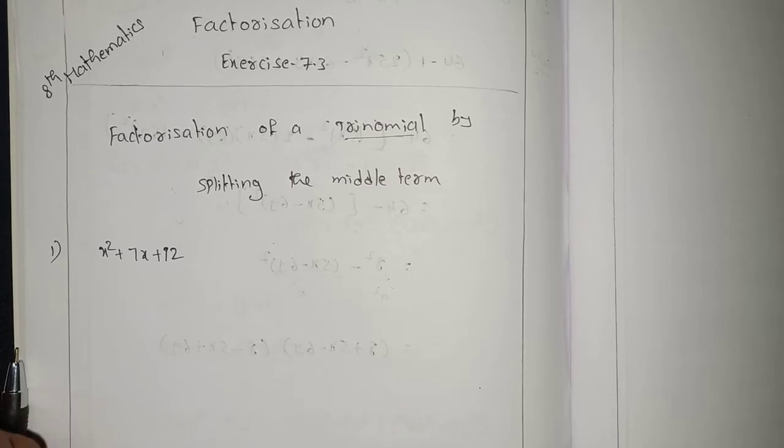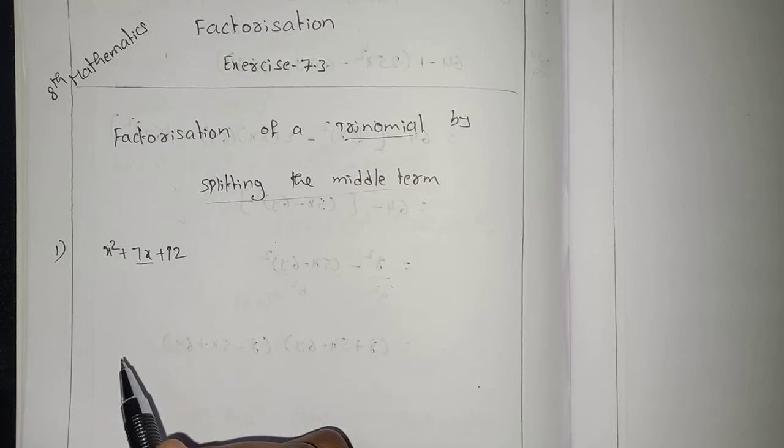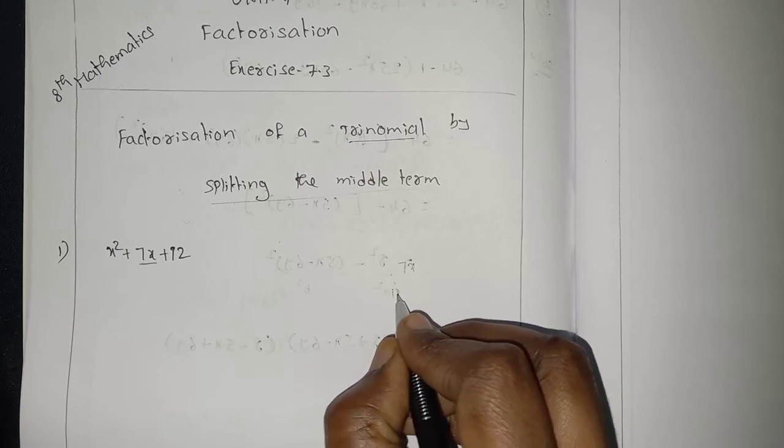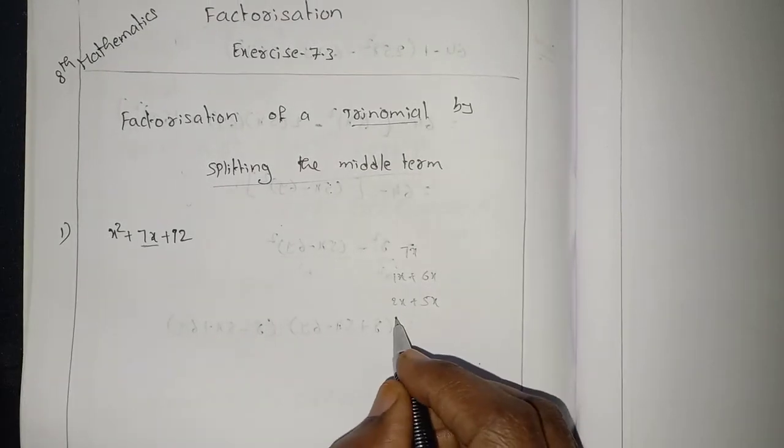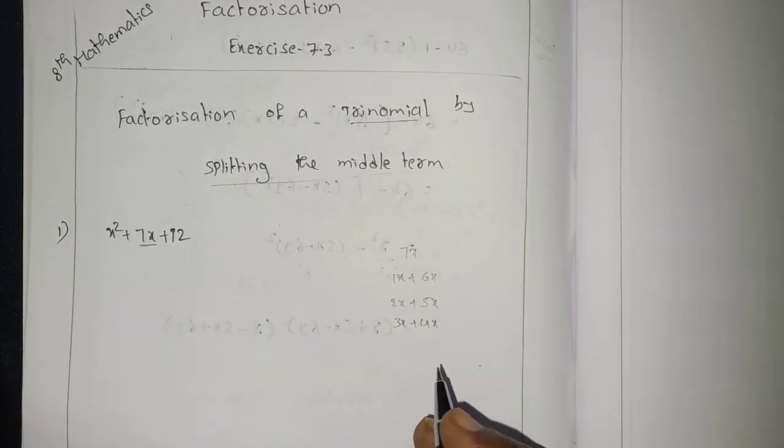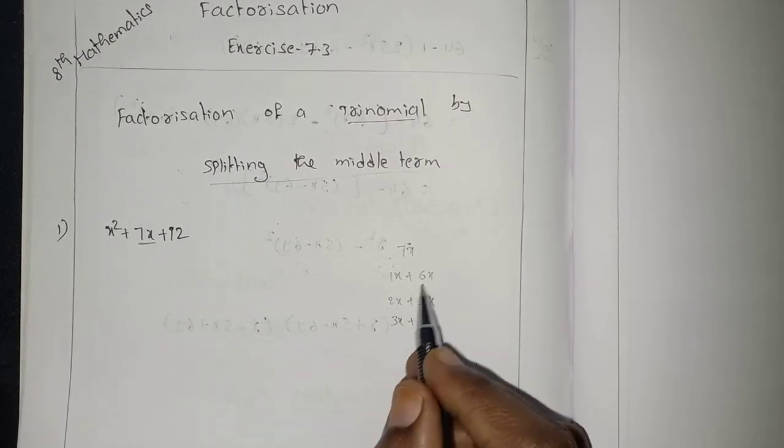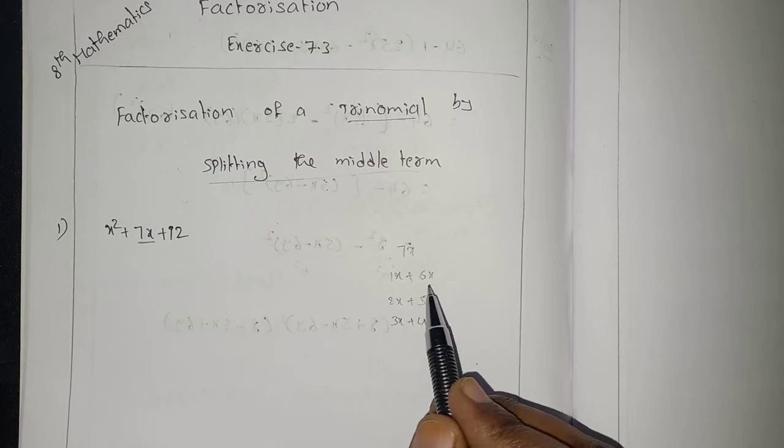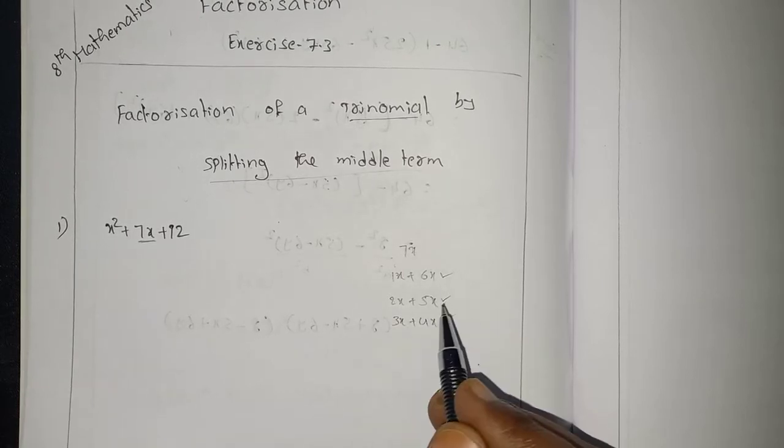So, this is the expression we have to factorize. And which method we are going to use now? Splitting the middle term. What is the middle term here? 7x. 7x we have to split. In how many ways we can split 7x? 1x plus 6x, 2x plus 5x, 3x plus 4x, like this. And reverse: 4x plus 3x, 5x plus 2x, 6x plus 1x. And out of all these things, we have to choose only one. Which one we have to choose out of these three? How to choose that?